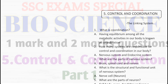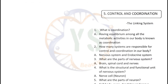Let's get into the topic directly. Control and Coordination — The Linking System. What is coordination? Having equilibrium among all the metabolic activities in our body is known as coordination. How many systems are responsible for control and coordination in our body? Nervous system and endocrine system.